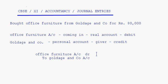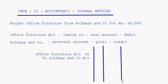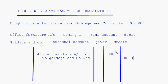This is in the format of a journal. The particulars column is here, you will have the ledger folio, debit amount, and credit amount, and the date column. On the debit side you will have 80,000 and credit side again 80,000. The narration for that comes here: being office furniture bought from Gold Age and Company.